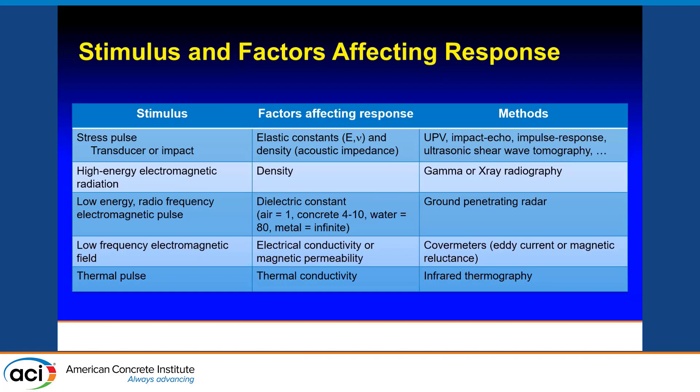Those properties are important to civil and structural engineers because they have physical significance and can be related to the integrity of the concrete. We can lump them together in a property called acoustic impedance, and it's the acoustic impedance mismatch that we use to detect changes inside concrete. The methods based on this type of stimulus include ultrasonic pulse velocity, impact echo, impulse response, ultrasonic shear wave tomography, and several others.